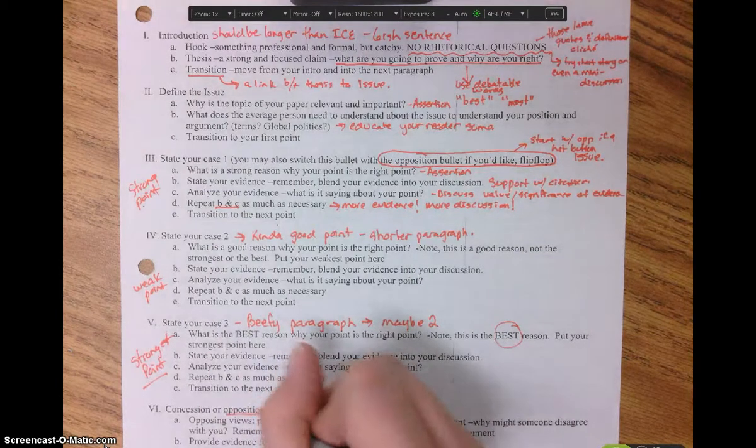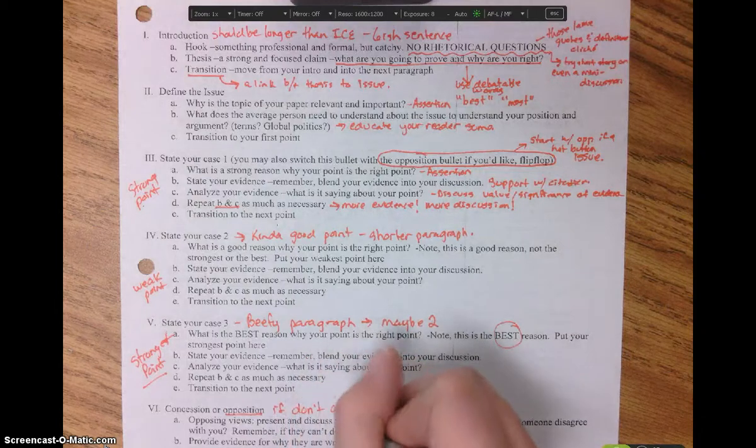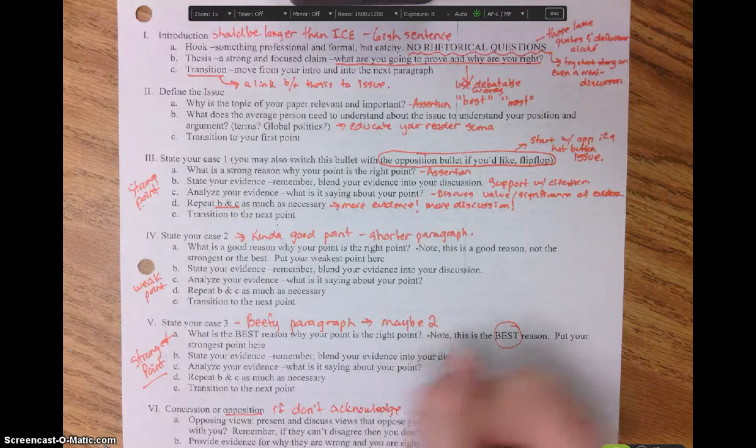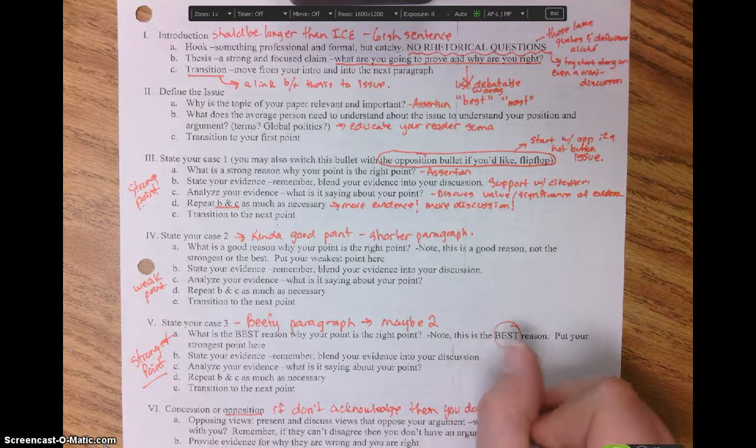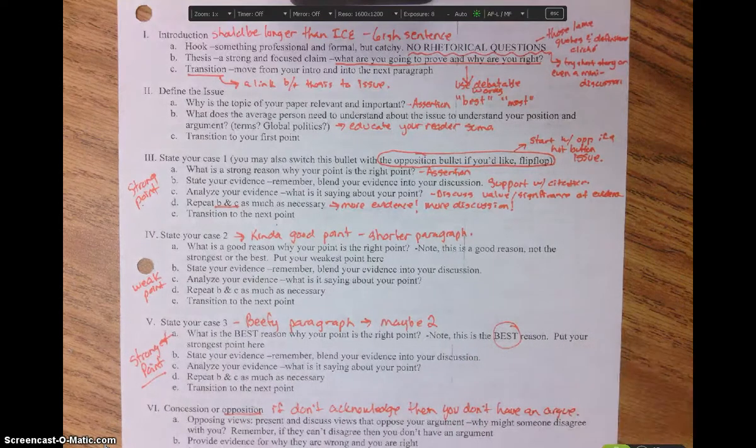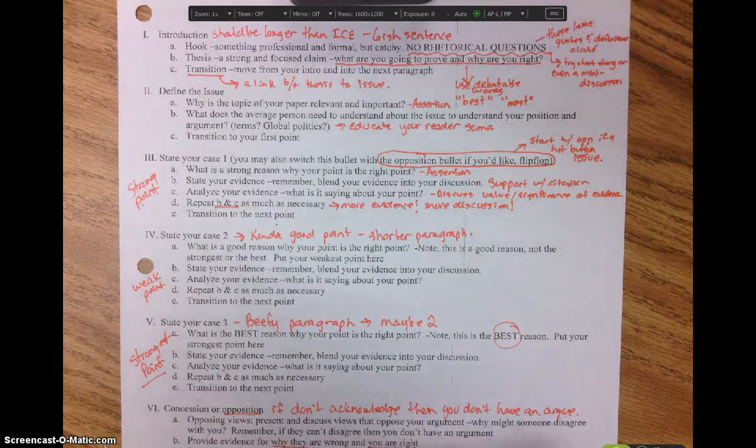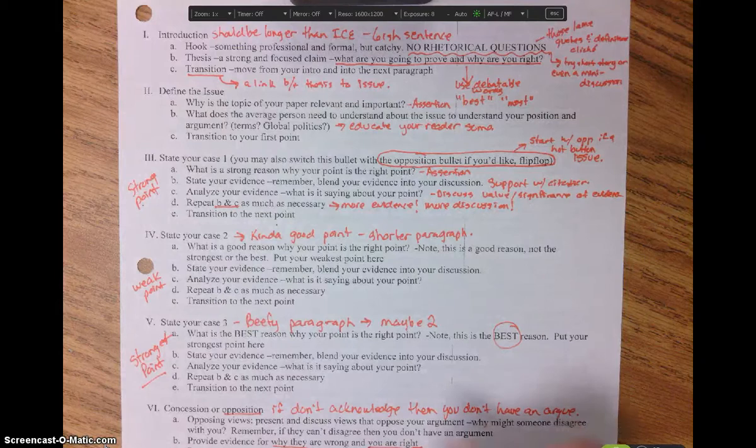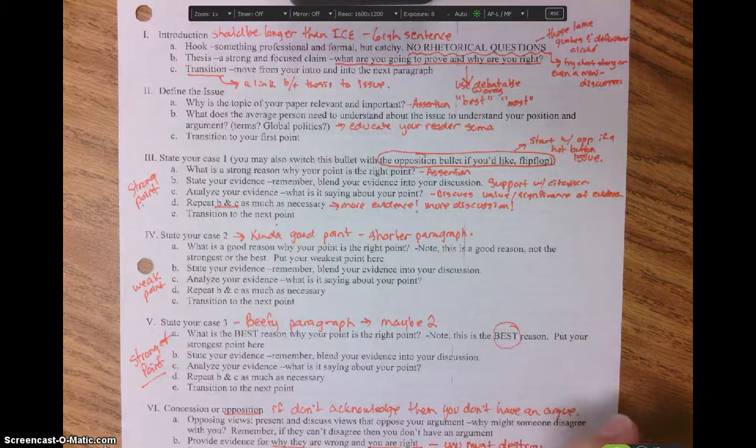Opposition. Again, if you don't acknowledge the opposition, that's bad. If you don't acknowledge them, then you don't have an argument. You have to at least acknowledge them just so that they know you're aware of the other side and you're aware that it's incorrect. You need to tell them why they're wrong and why you're right. So it's just another way of being persuasive. I always say you must destroy them. Completely annihilate their argument.